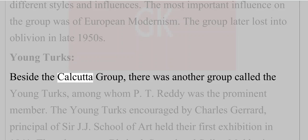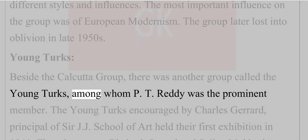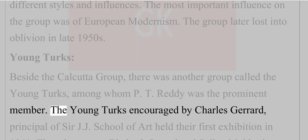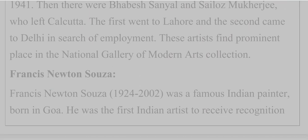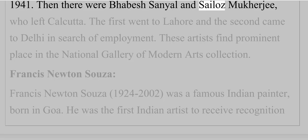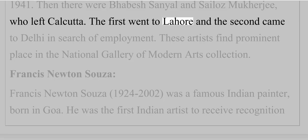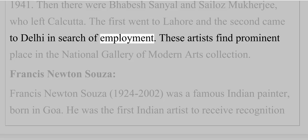Beside the Calcutta Group, there was another group called the Young Turks, among whom P.T. Reddy was a prominent member. The Young Turks, encouraged by Charles Gerard, principal of Sir J.J. School of Art, held their first exhibition in 1941. Then there were Bhabesh Sanyal and Silas Mukherjee, who left Calcutta. The first went to Lahore, and the second came to Delhi in search of employment. These artists find a prominent place in the National Gallery of Modern Art's collection.